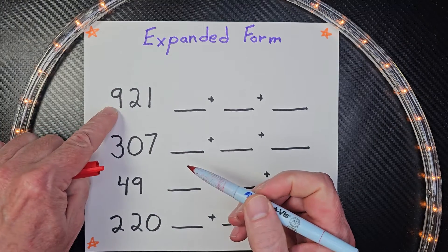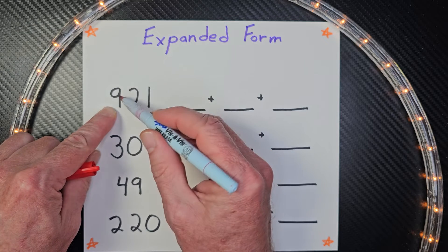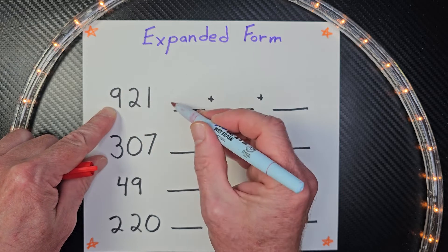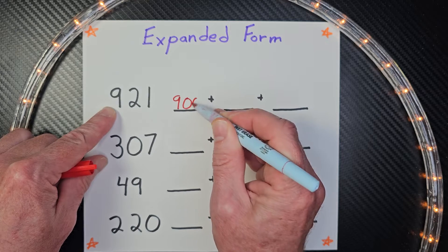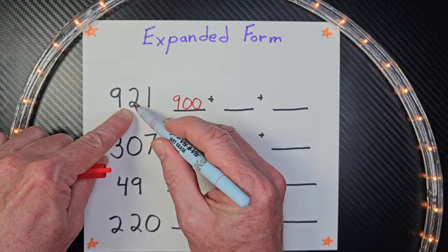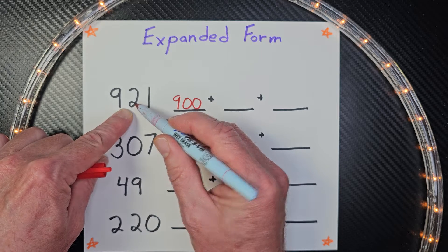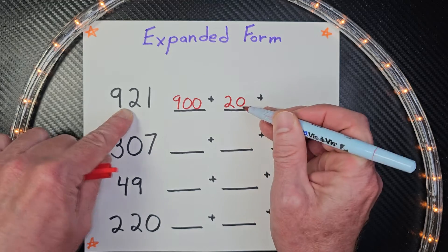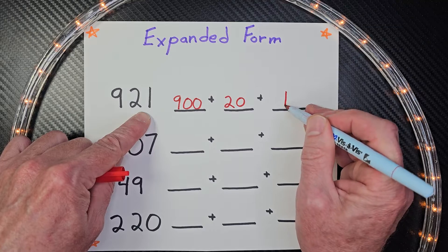Remember, we're starting from the left. And so 9, that is in the hundreds place. So we would write 9 as 900. So I'm going to put 900 right here. And now I move to the right. And now this 2 is in the tens place. So that would be 20. I'm putting 20 right here. And the 1 is in the ones place. So I just simply put 1 right there.